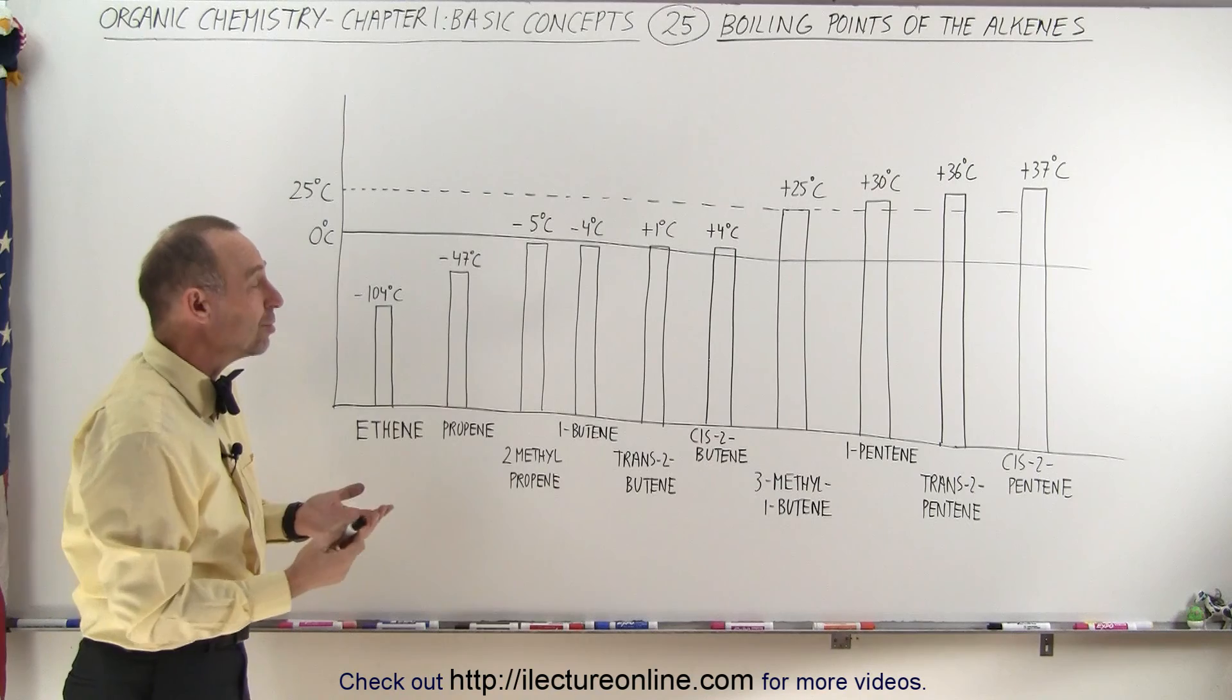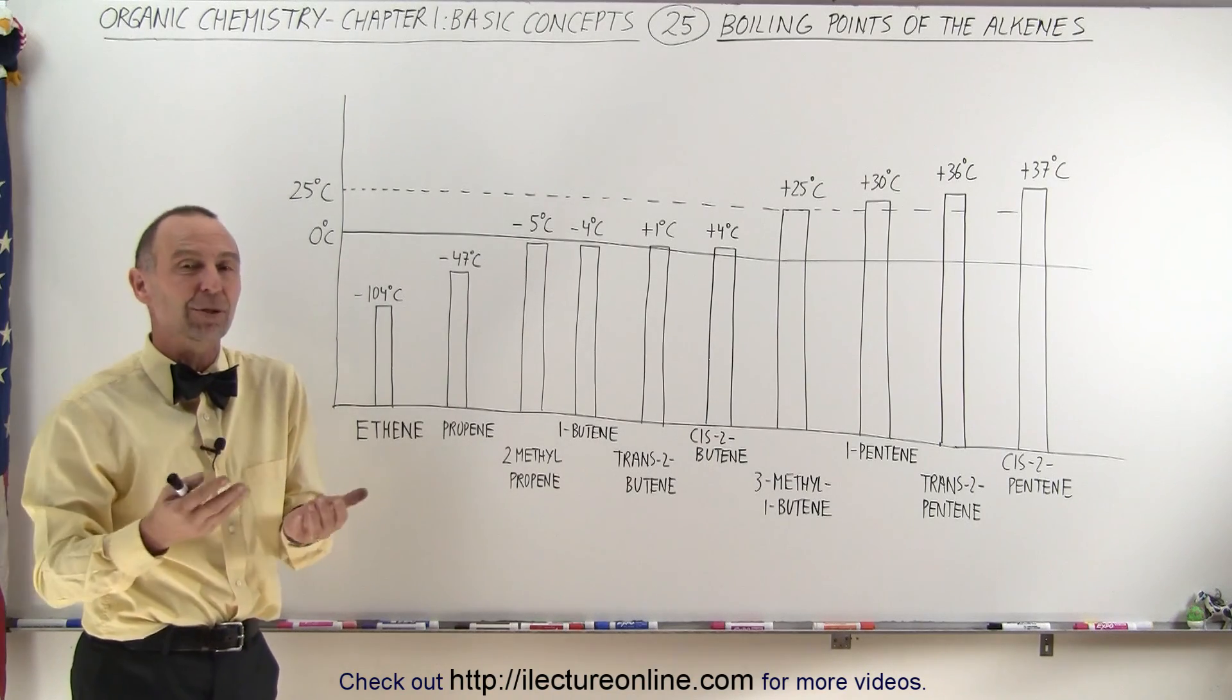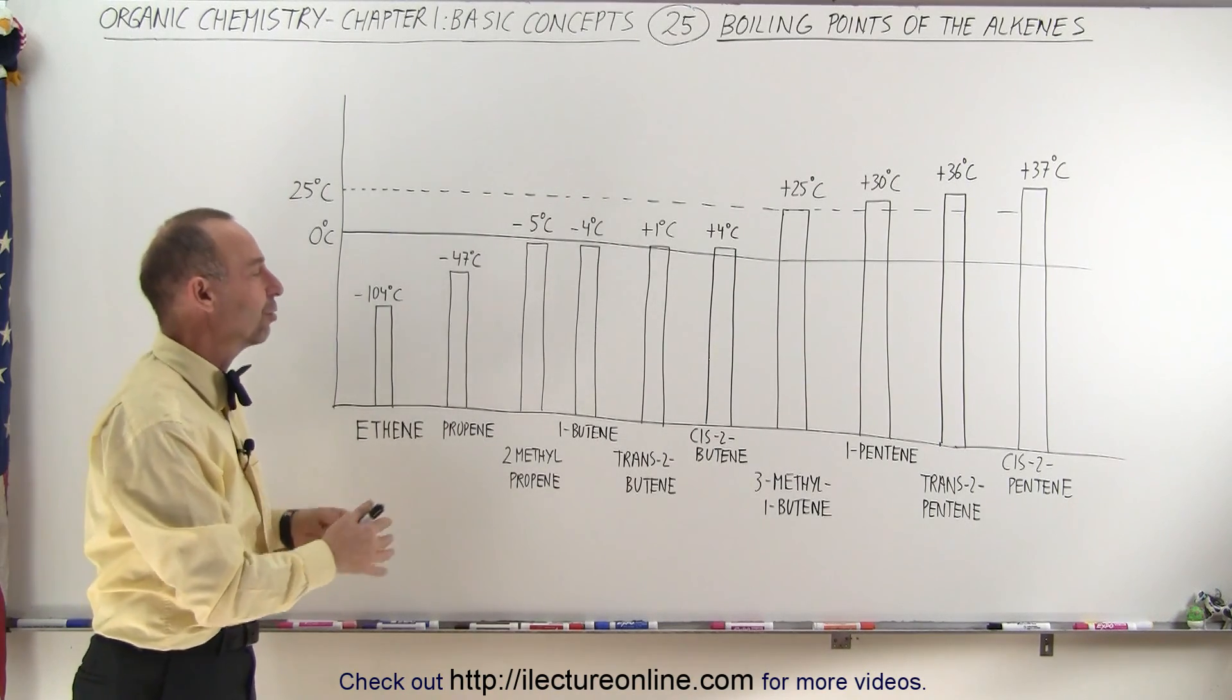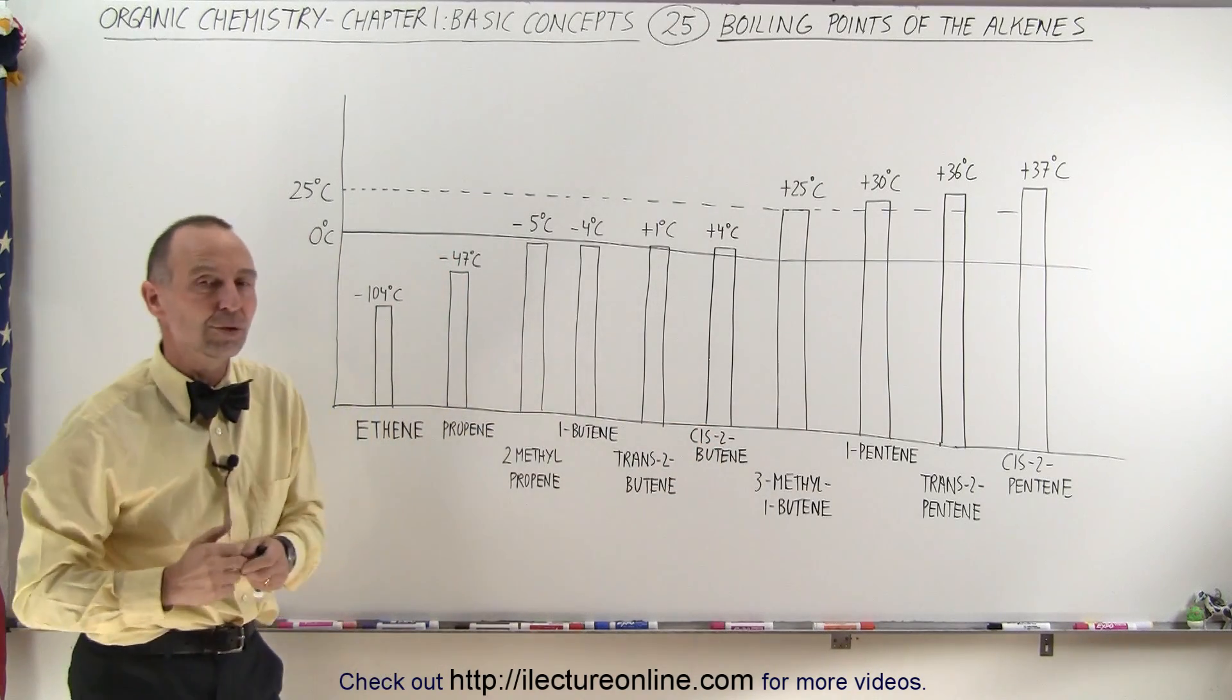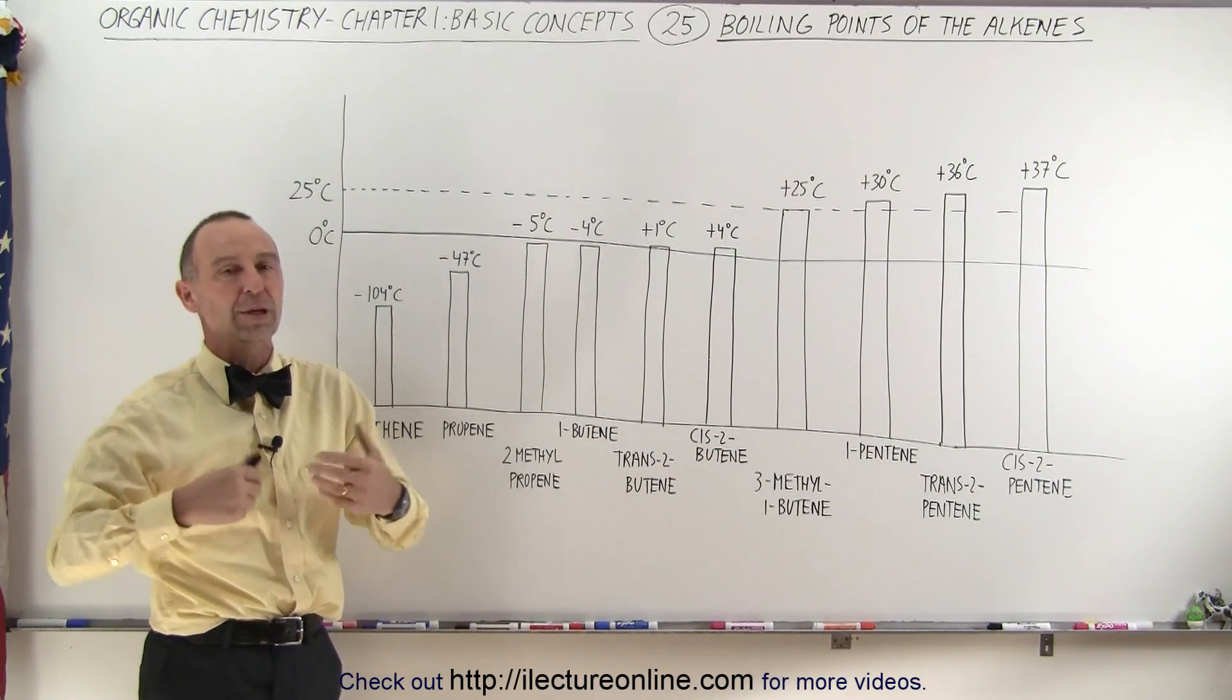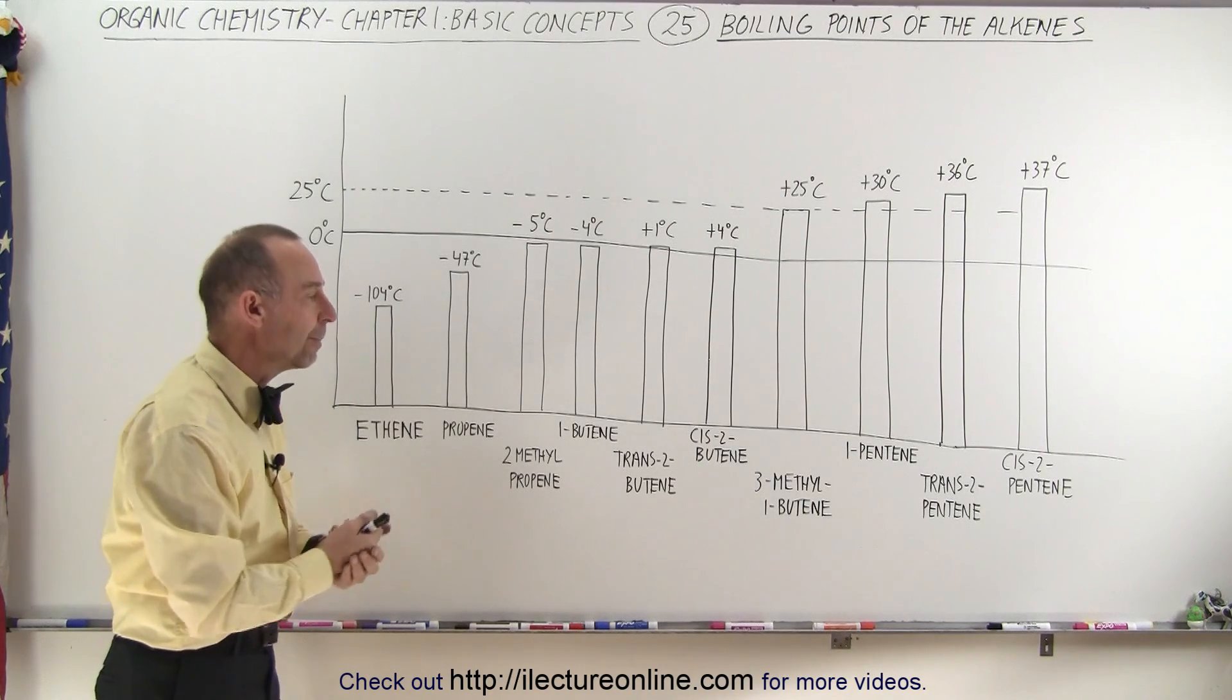It's a good thing that we typically don't need to do that because the properties are very similar and we typically don't care too much whether we have cis-2-butene or trans-2-butene separated from one another. We can make most compounds with them mixed together.